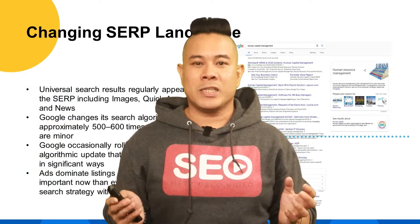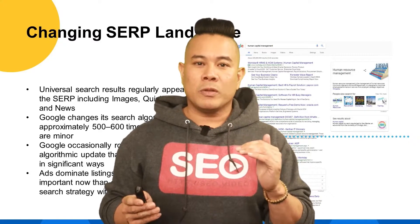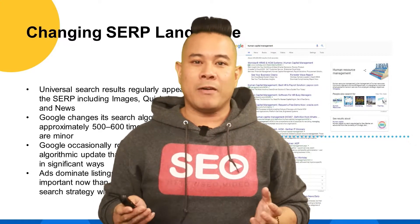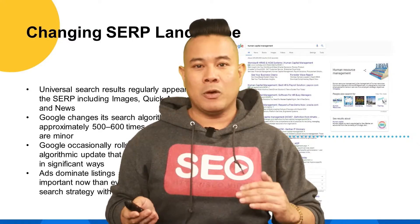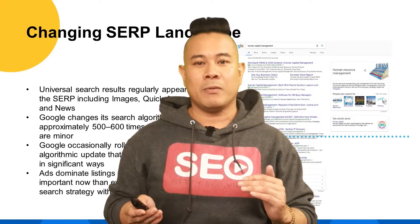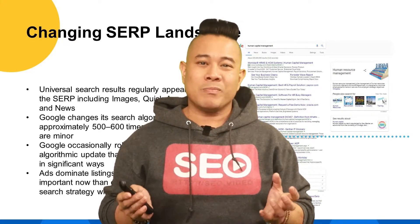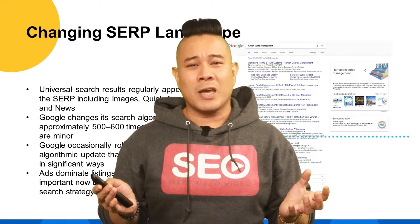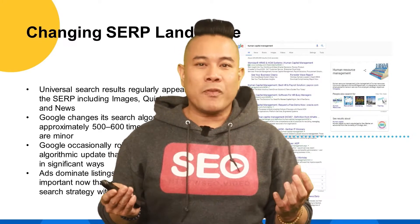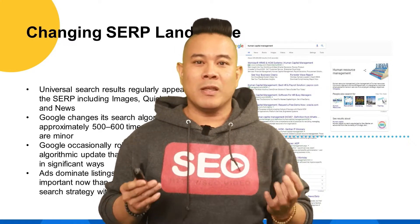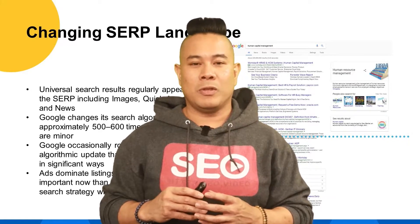The changing landscape of search results: above the fold you usually have paid results, and right below it you'll have organic results. The search engine changes about 600 times a year and will have probably five to six major updates throughout the year.